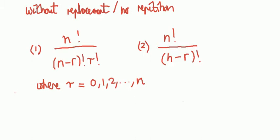Say you have to memorize the formula for combination and permutations, the case without replacement or no repetition. How do you know which is which? Which is for combination? Which is for permutation?